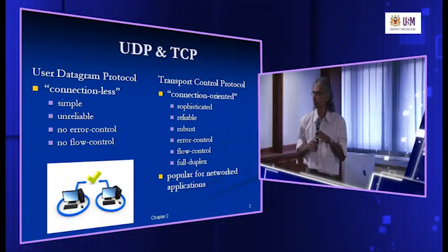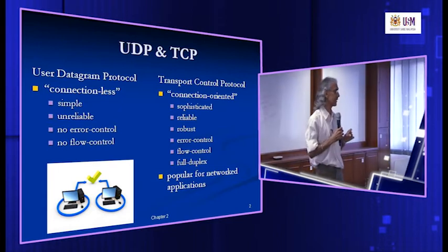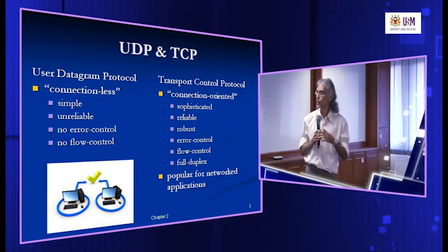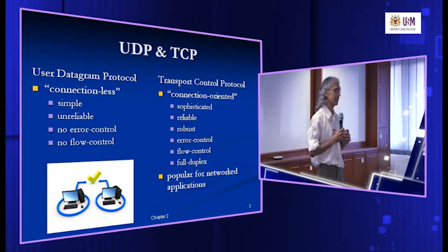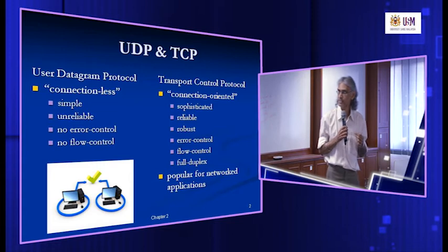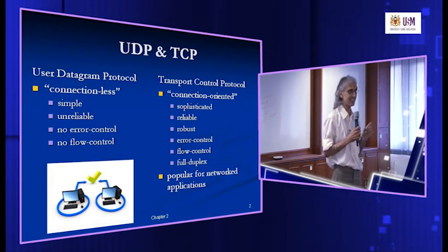Before we go further, let's do a little revision of UDP and TCP. The transport layer has two protocols: UDP and TCP. The UDP protocol is connectionless — it's very simple, it doesn't do much. It just sends the data out in a UDP packet and hopes for the best. It's simple, unreliable, with no error control and no flow control. It does not try to connect and doesn't even try to see whether there's a server out there. If there's an error, it does not detect errors or congestion — nothing.